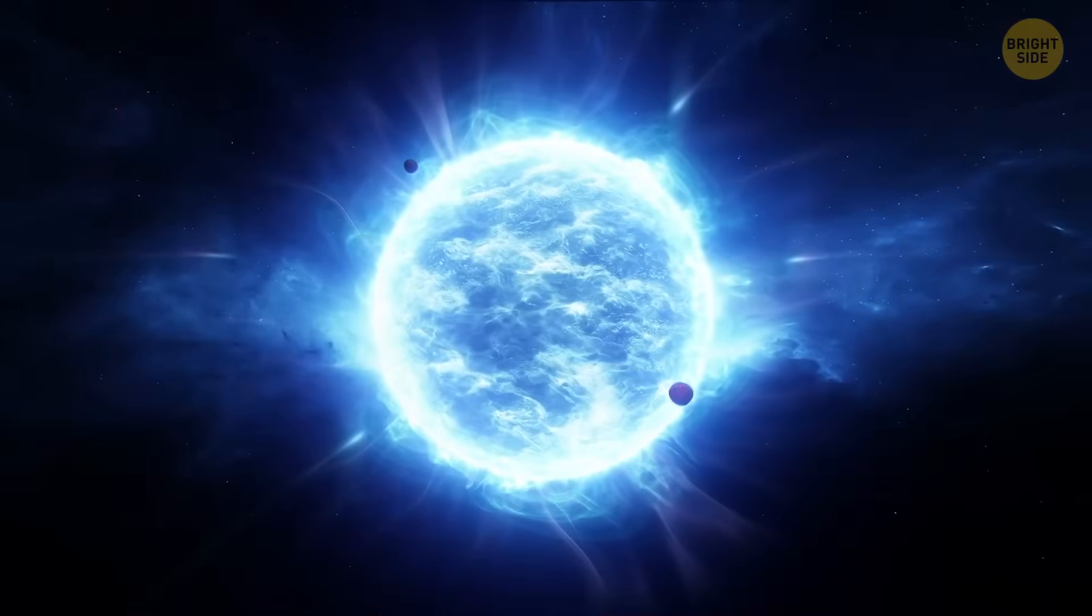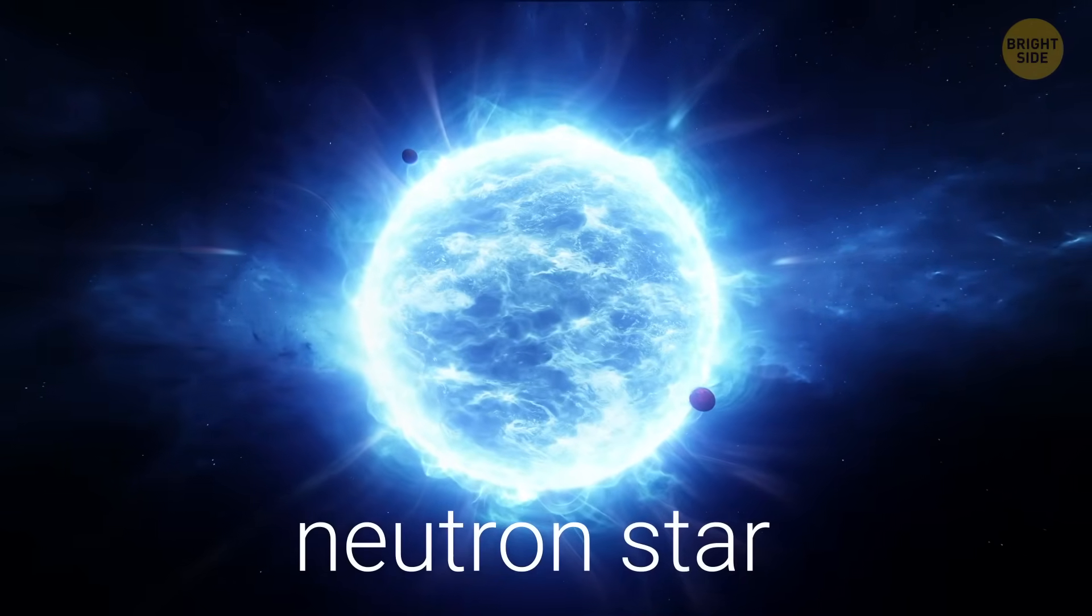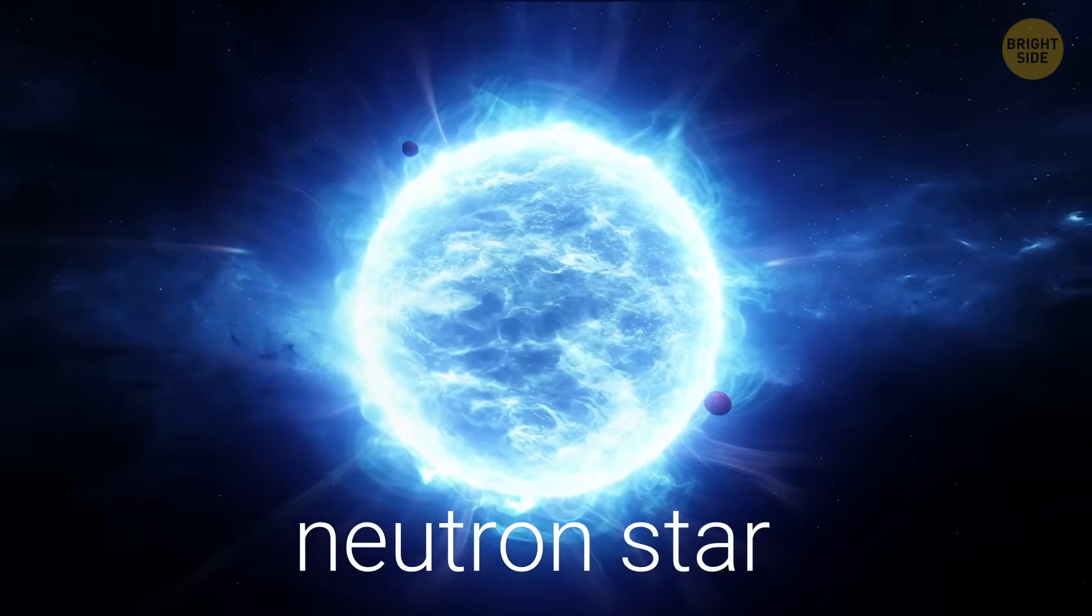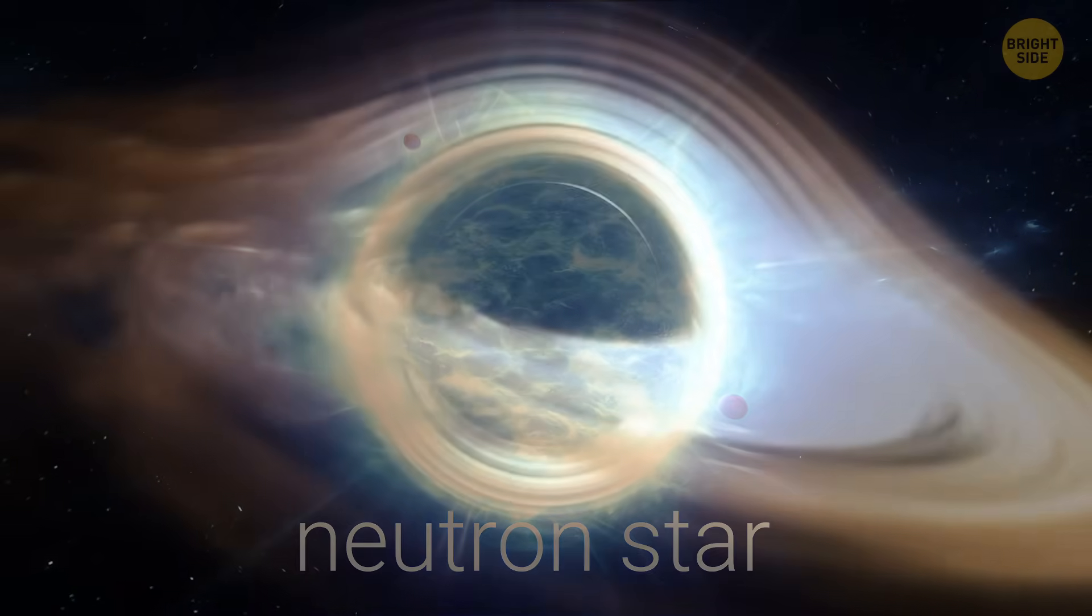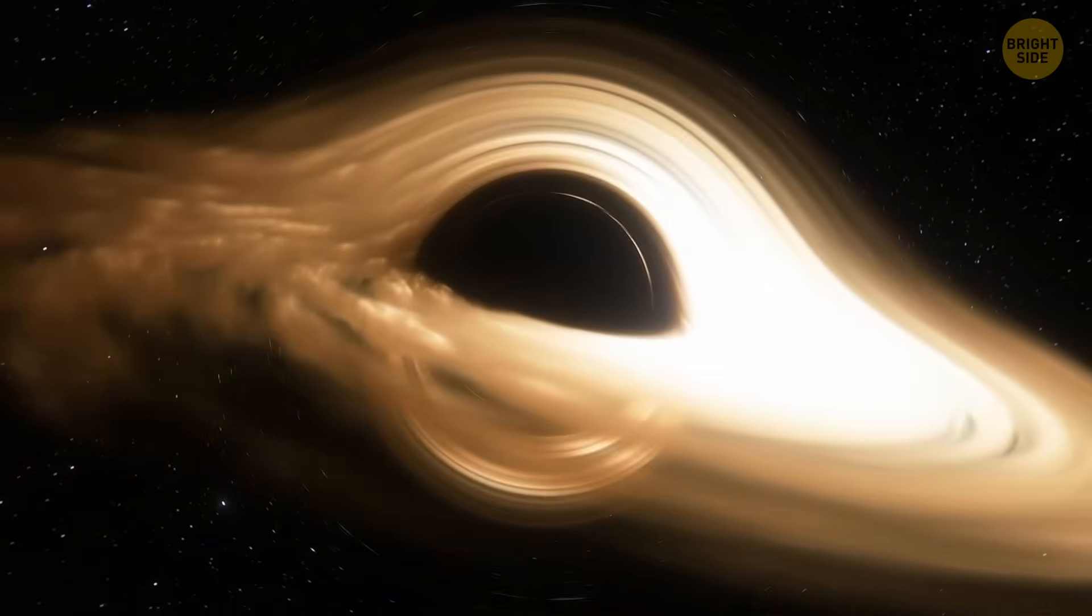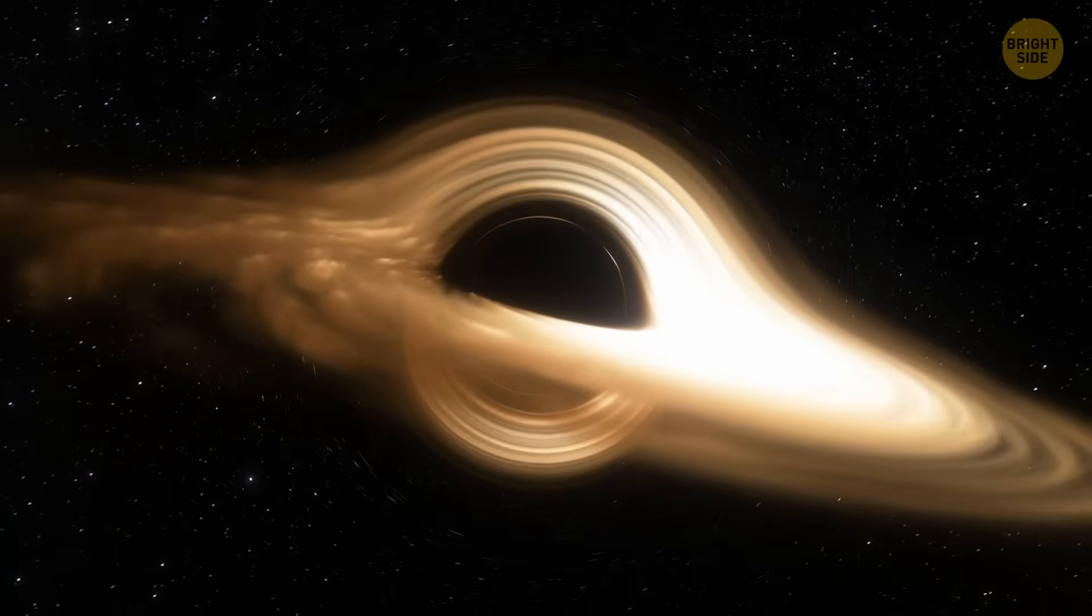Medium-big ones leave behind a neutron star, an ultra-dense remnant of a star. But if it was 20 times the Sun or more, it collapses all the way down into a stellar-mass black hole.